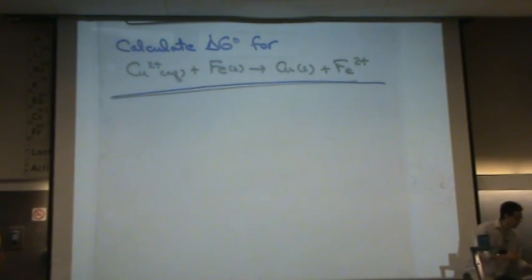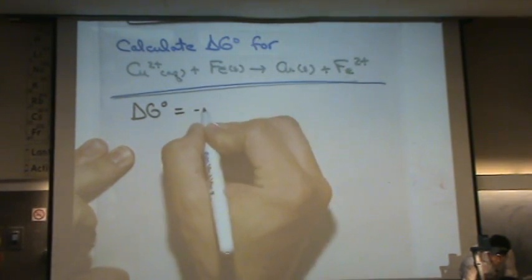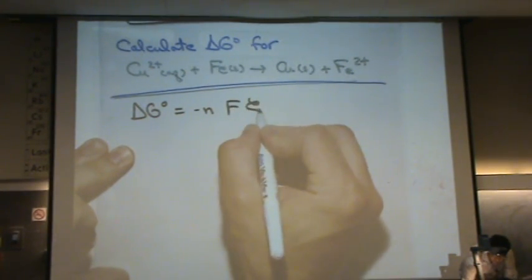So to find delta G, I have to do a couple things. I'm going to use again the formula delta G standard equals minus nF E cell potential.